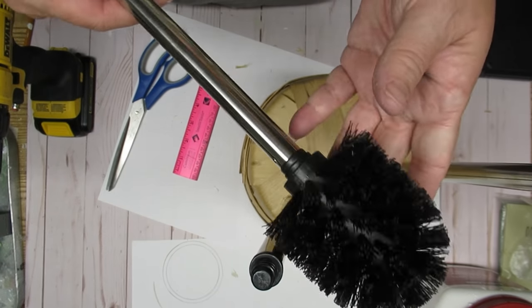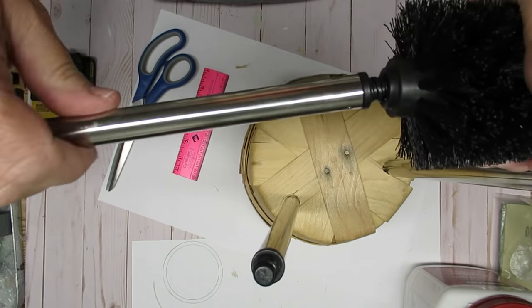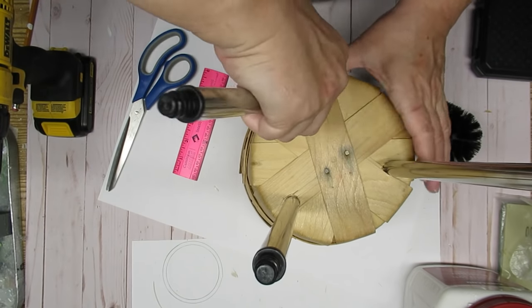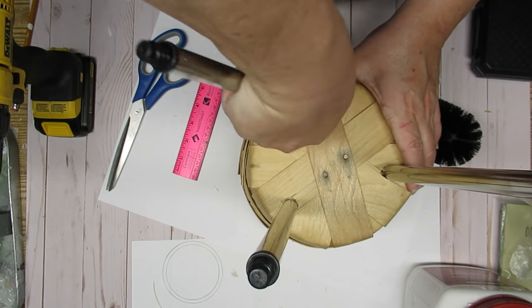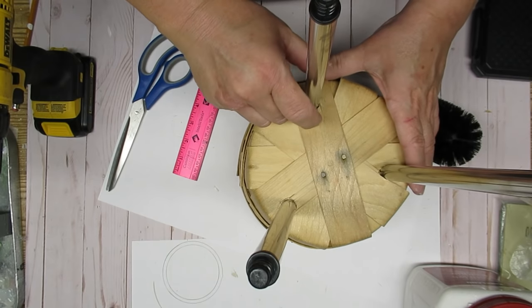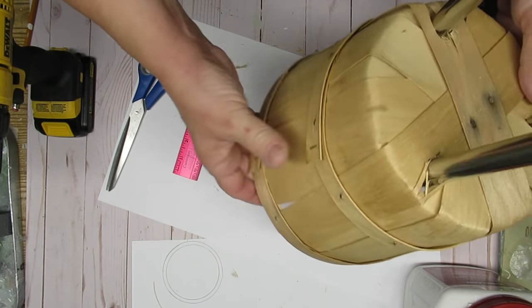So guess where these metal posts came from? Yep, they're the sticks from the toilet brushes, and they are the perfect addition to this to make a beautiful little plant stand. I did have to work a little bit hard to get that in there, but it was worth it in the long run.